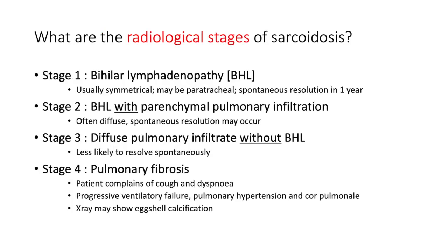What are the radiological stages of sarcoidosis? The Scadding classification has four stages. Stage 1 is bilateral hilar lymphadenopathy — usually symmetrical, possibly paratracheal — and typically resolves spontaneously within a year. Stage 2 adds bilateral hilar lymphadenopathy together with peripheral parenchymal pulmonary infiltrates, often diffuse.